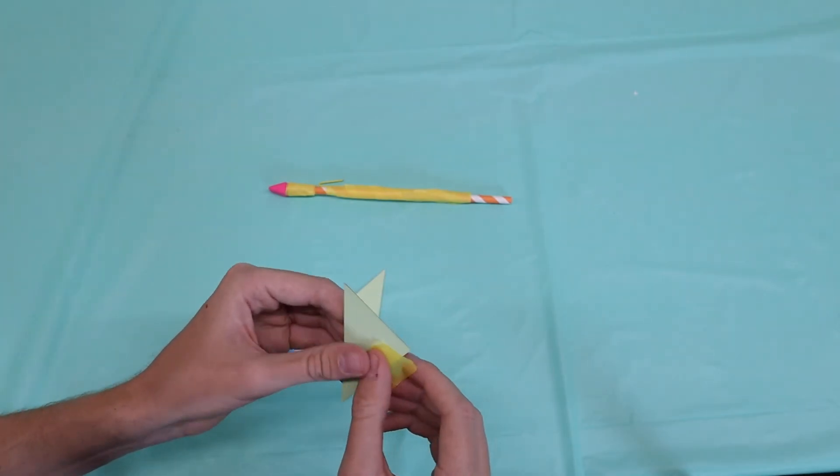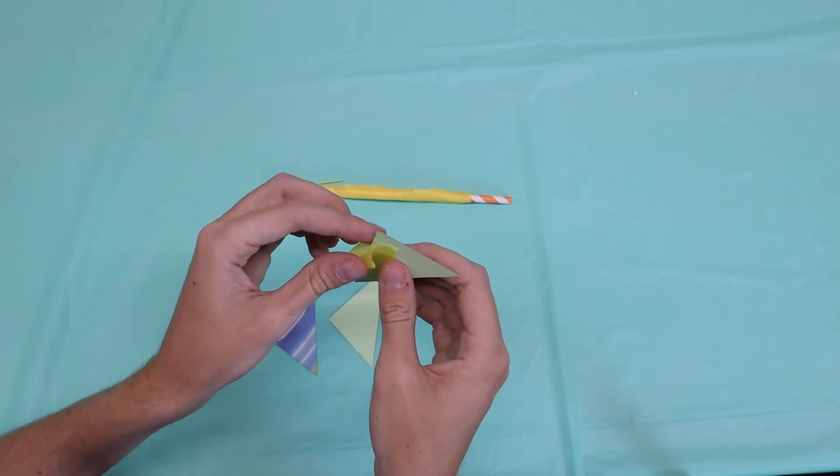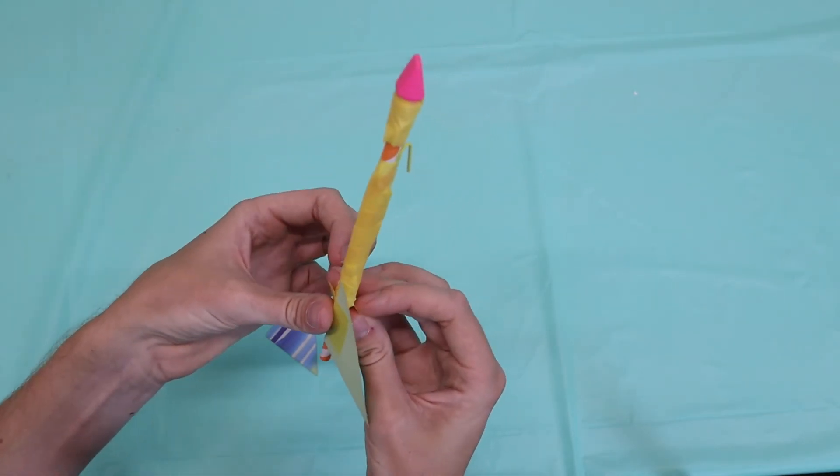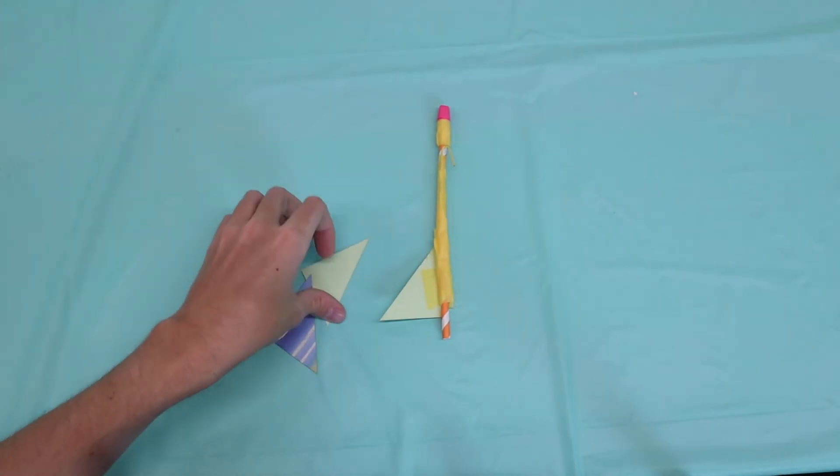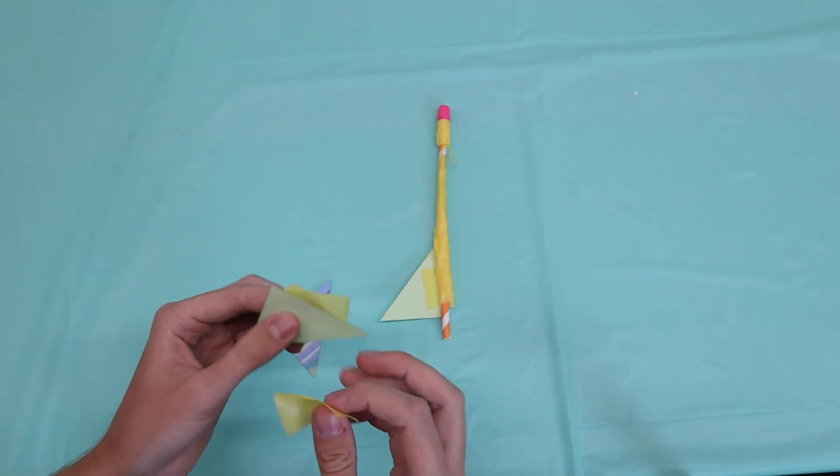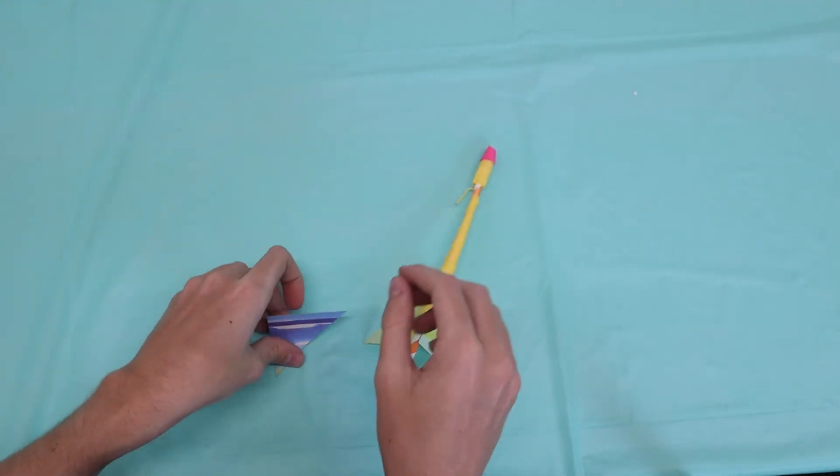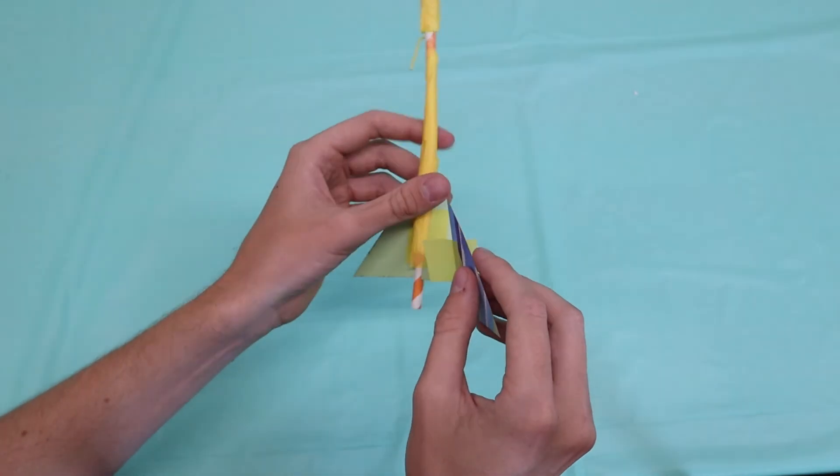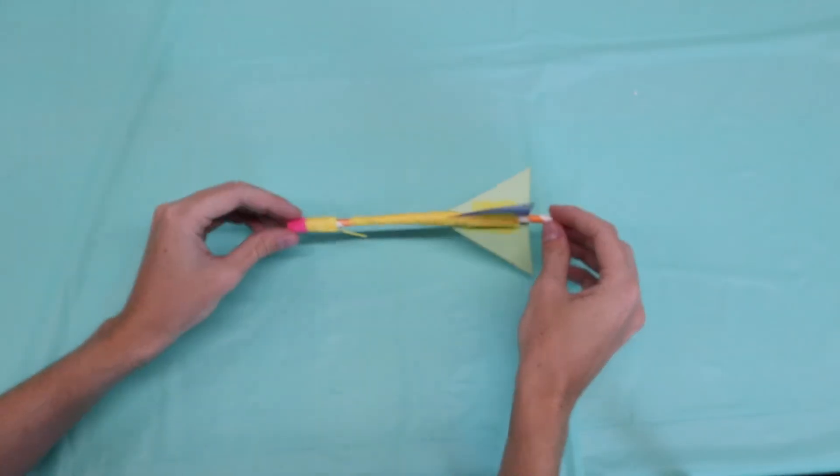Now it's time to attach those fins. Go ahead and grab one of the triangles and add a piece of tape to either side. You're going to be attaching this towards the back of your rocket, making sure to leave about a half inch of straw at the end. Try your best to make the fins as straight as possible and have them evenly spaced apart. Go ahead and repeat this process with the other two fins and you'll be ready to roll.